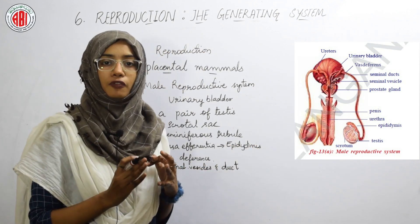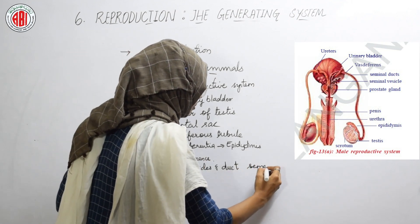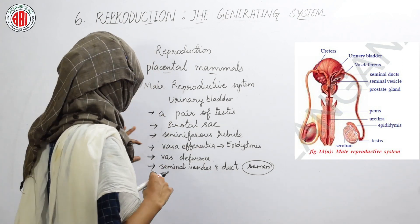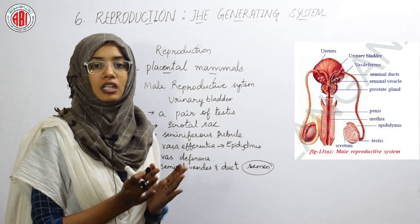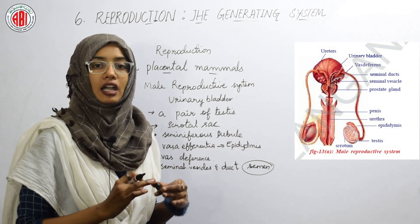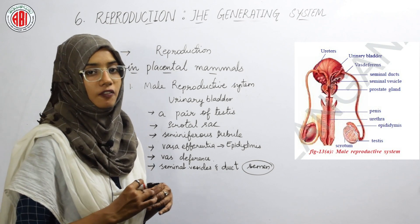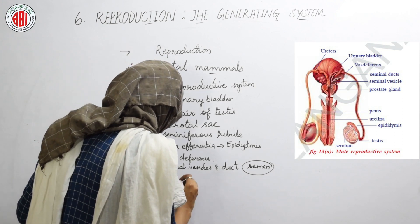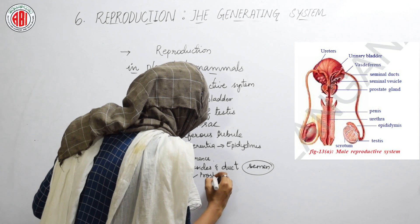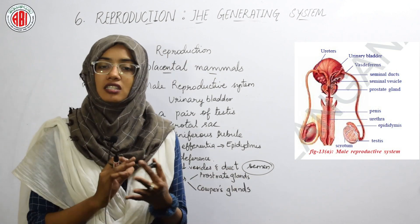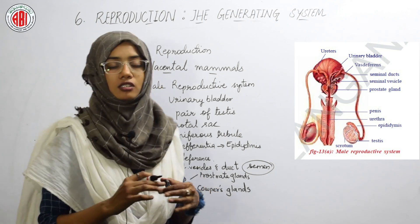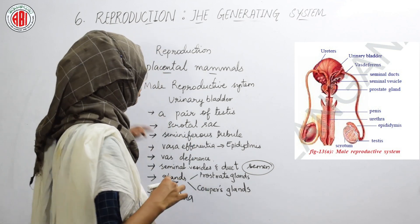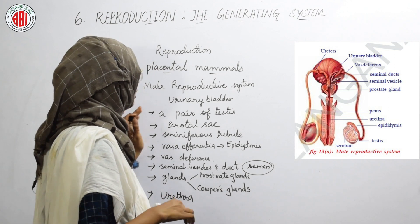The seminal vesicles and ducts secrete a fluid called semen. Semen is a sticky fluid that provides nourishment to the sperm cells. When the sperm cells reach the seminal vesicles and seminal ducts, semen mixes with the cells and helps provide nourishment. The male reproductive system also contains glands — the prostate gland and Cowper's gland — which send the sperm cells to the urethra. The urethra is the final point through which the male reproductive cells pass out of the body.